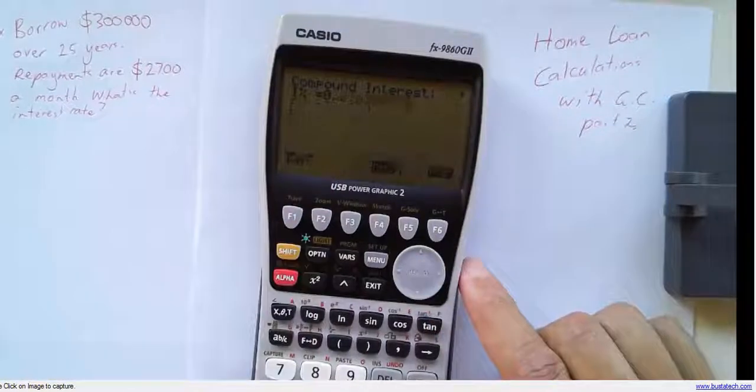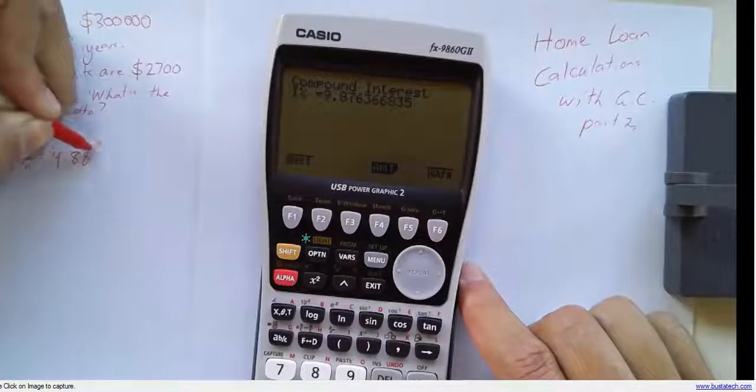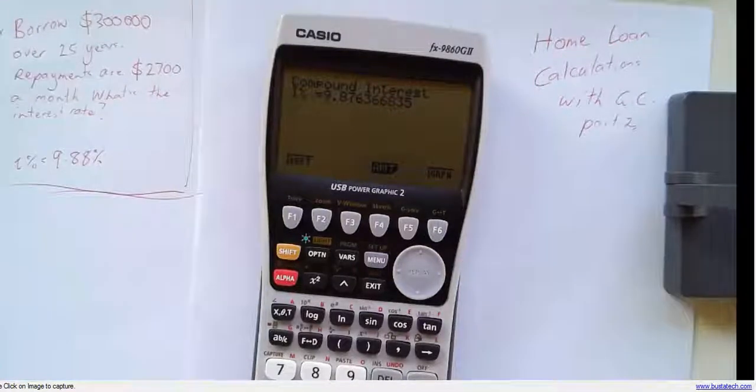All right, press the interest rate button, which is F2. The interest rate on this one is 9.88% per annum, compounding monthly.